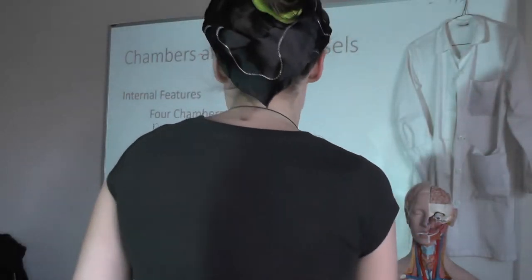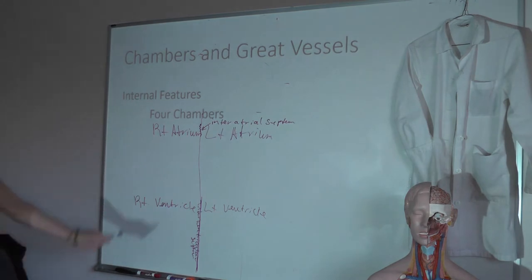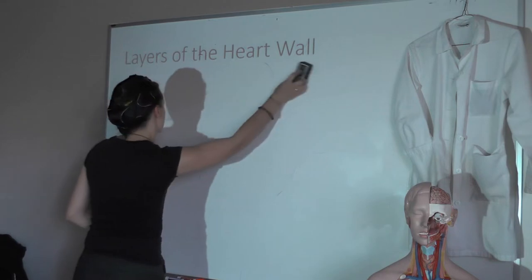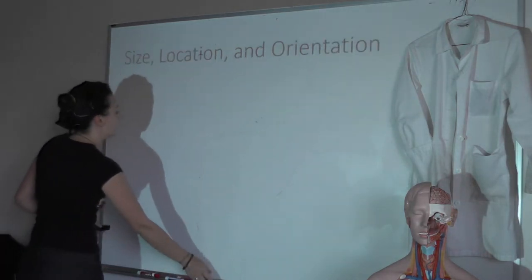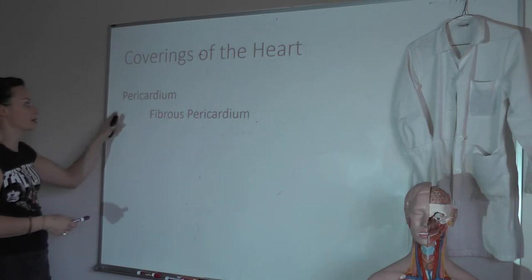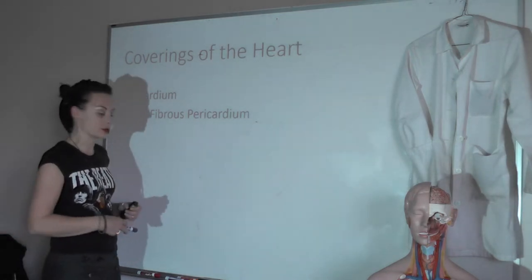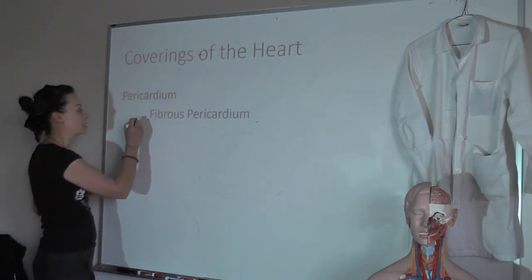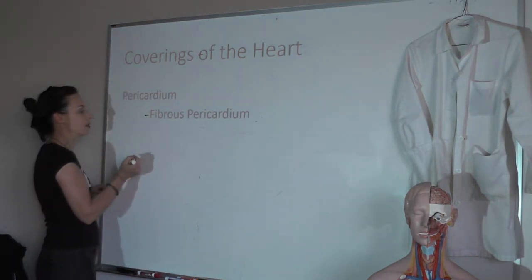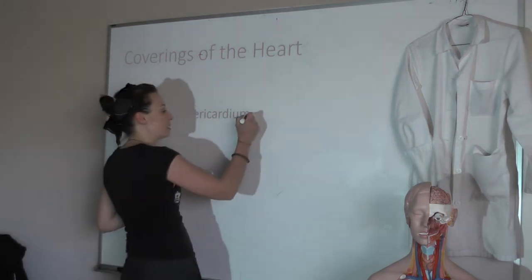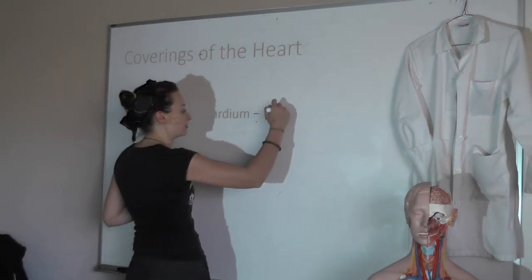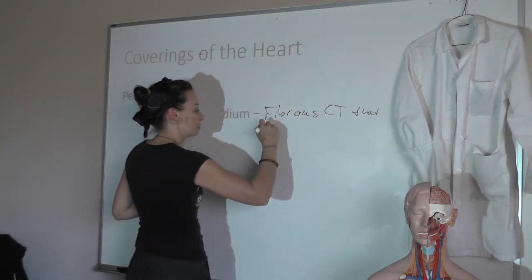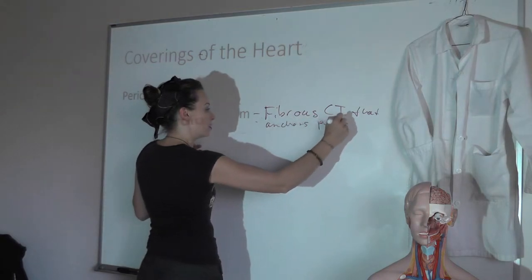Here we can see the pulmonary semilunar valve, and back here is the aortic semilunar valve. The pericardium is the serous membrane surrounding the heart, and it is unique because it has a third layer — the fibrous pericardium. This fibrous connective tissue anchors the rest of the pericardium in the thorax.